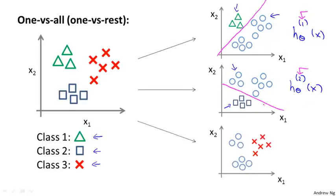And finally, we do the same thing for the third class and fit a third classifier, h superscript 3 of x, and maybe this will give us a decision boundary, or give us a classifier that separates the positive and negative examples like that.